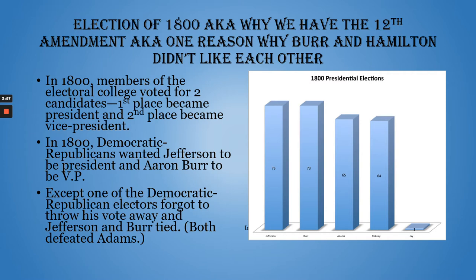Apparently the Democratic-Republicans couldn't figure out that that's how this should have worked, or someone just forgot. Because all the Democratic-Republicans in the Electoral College wanted Jefferson to be president and Burr to be vice — and every single one of them wrote both Jefferson and Burr. So both Jefferson and Burr ended up with 73 votes in the Electoral College. You had a tie.